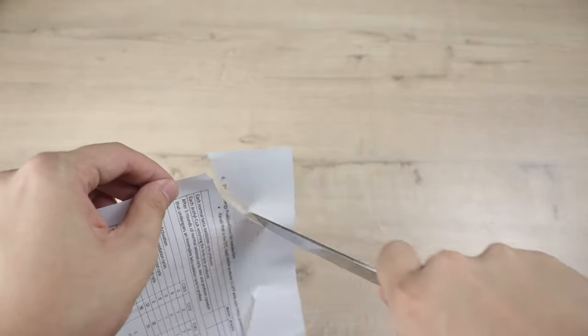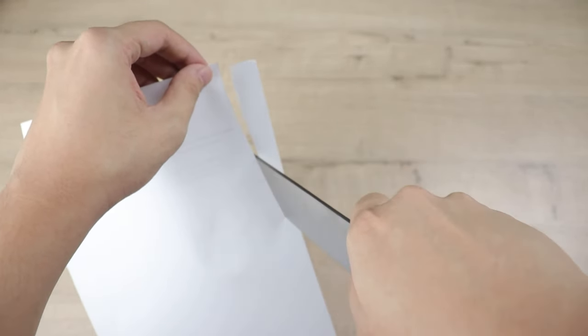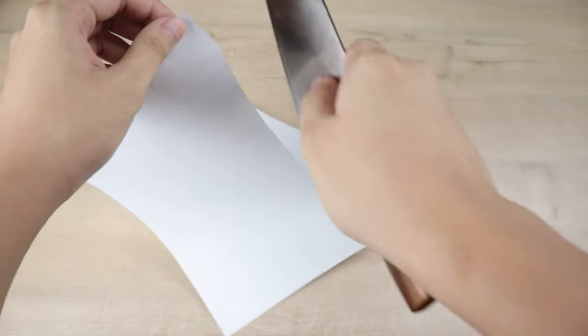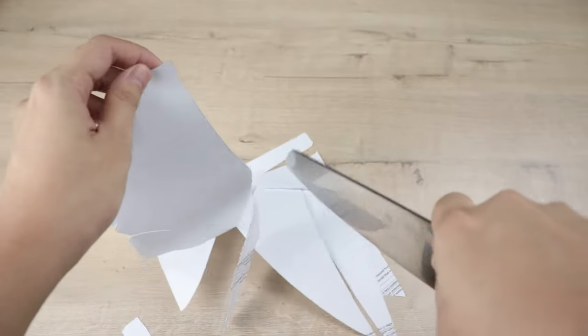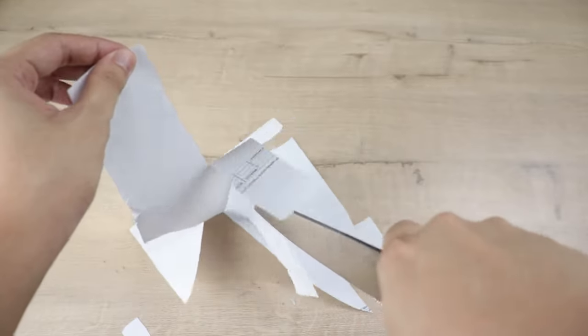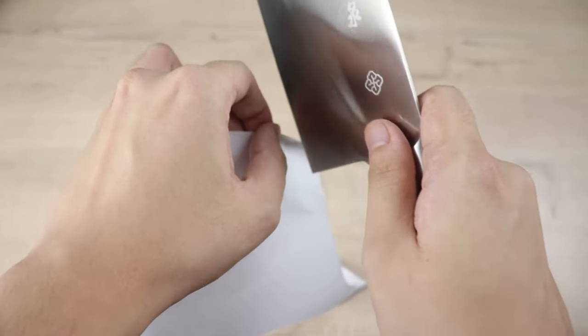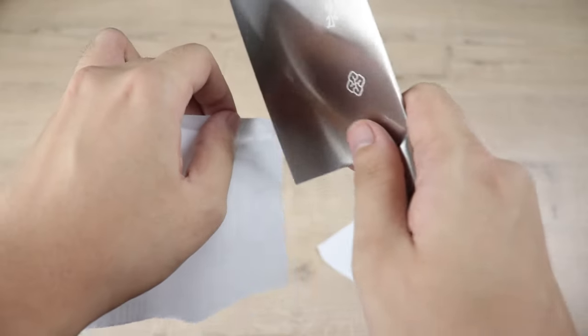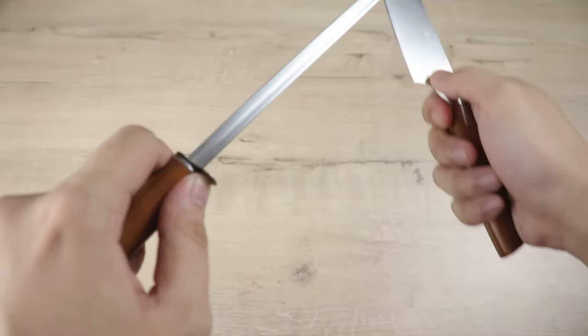As you can see from the paper test, things are very sharp. So be careful using the knives. Make sure that you are safe and use the proper technique in using the knife to prevent any bleeding. Very sharp knife, all of them—the paring knife, the santoku knife, and the butcher's knife. It goes through paper like nothing, which is really good.